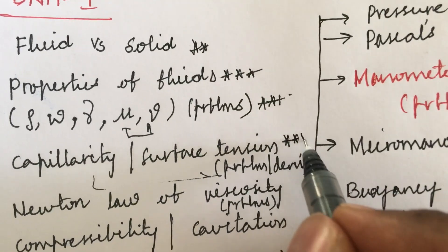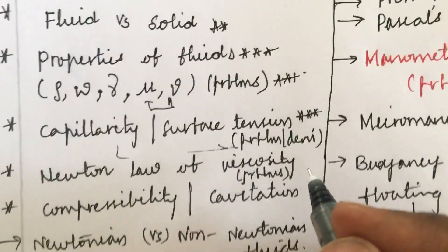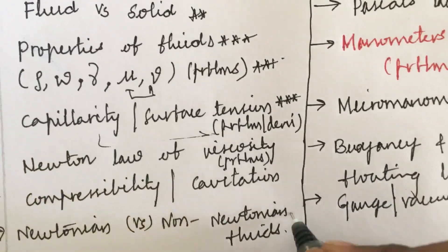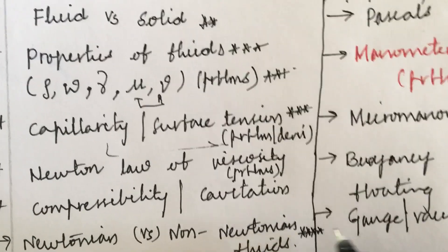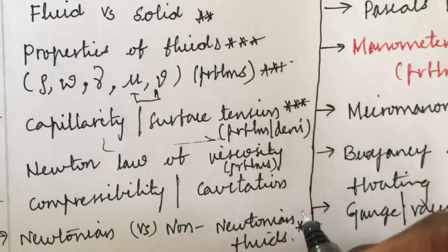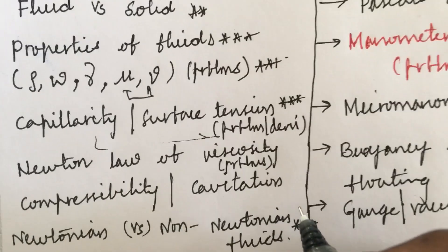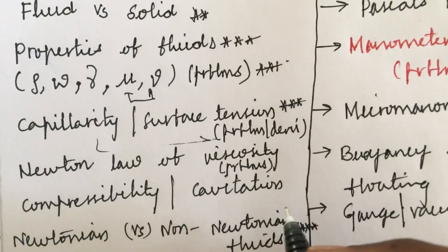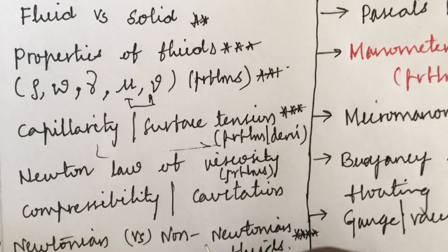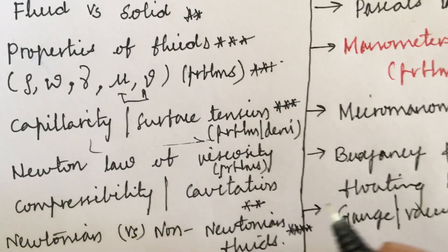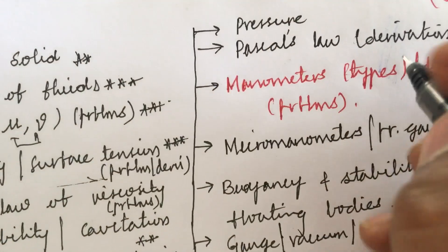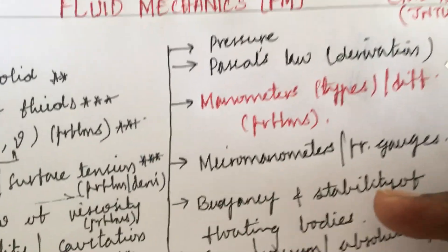Surface tension is also said to be a short question. Newton's law of viscosity, its problems, and the differences between Newtonian and non-Newtonian fluids are the topmost questions. Work out each and every parameter highlighted here as very important questions, since the exam pattern is all about Part A and Part B. Define the terms compressibility and cavitation — these may be short questions, and short questions may be asked from any corner of the course.